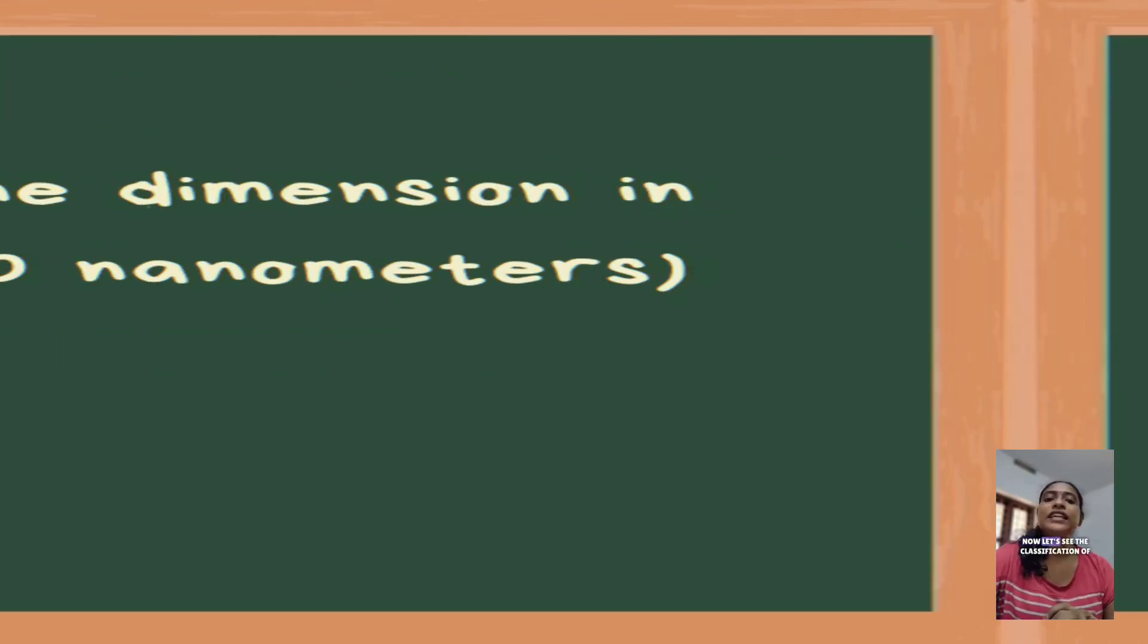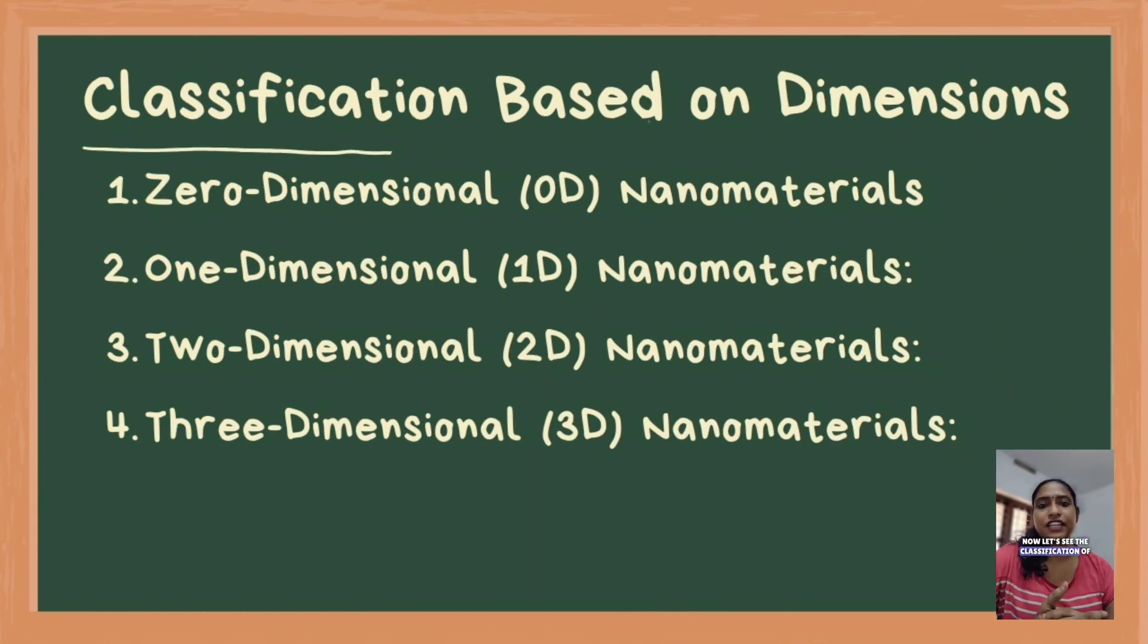Now, let us see the classification of nanomaterials. There are two approaches to classify nanomaterials: one is dimensions and the other is materials. The first one is based on dimensions. There are four classifications based on dimensions.